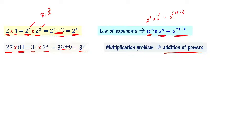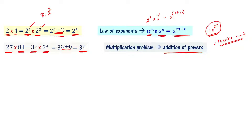Numbers like 27 and 81 are smaller, but with very large numbers, exponents make calculations easy. For example, 10 power 29 — you don't need to write out the full number with 29 zeros. Such big numbers can be represented simply in exponent form. Similarly, division problems can also be simplified using exponents.